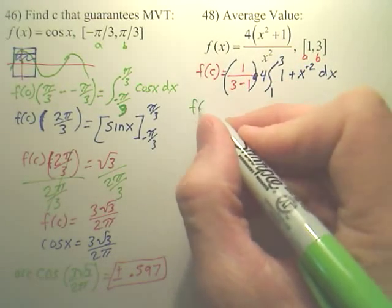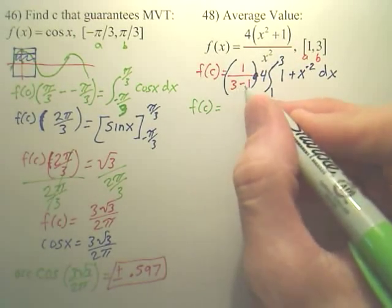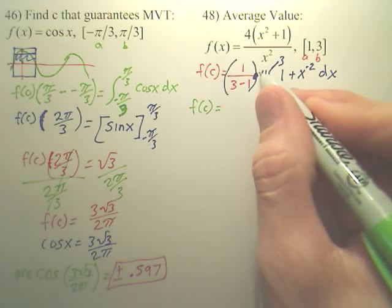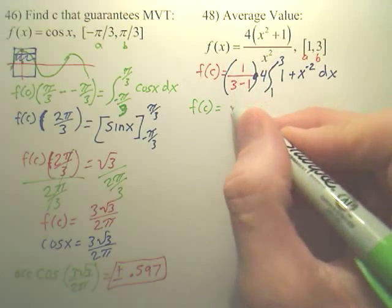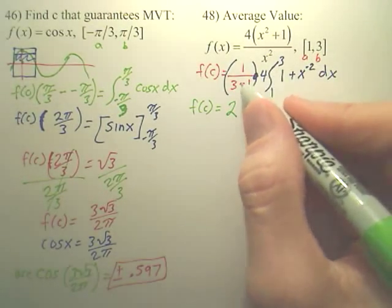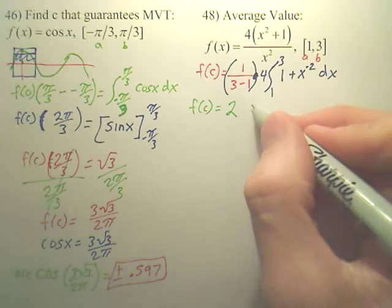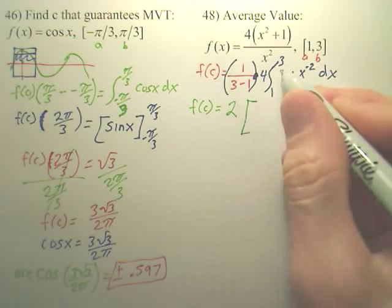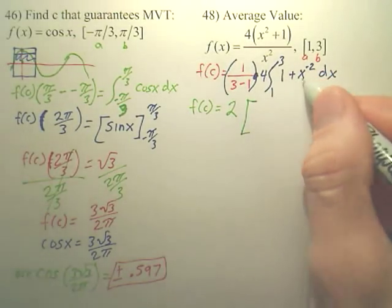So, f of c is equal to, isn't 3 minus 1, 2? And isn't 4 over 2 going to simply give me 2 out front? Now, the interval, we'll wait on the interval from 1 to 3. Let's integrate this.